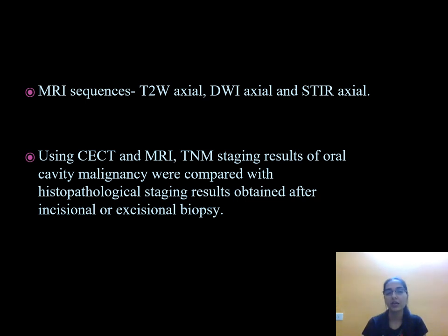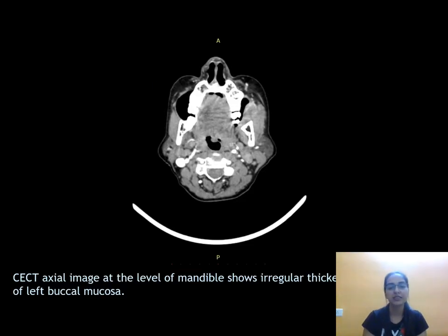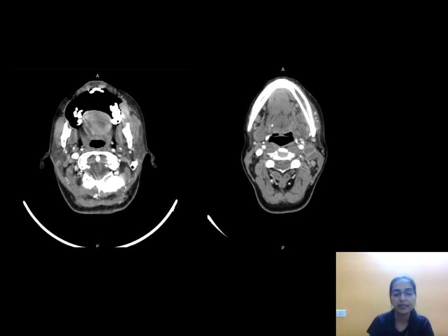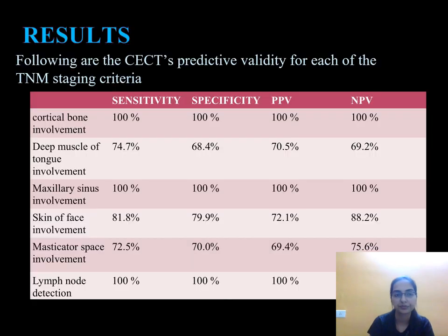The CCT axial image at the level of mandible shows irregular thickening of the left buccal mucosa, extending anteriorly from the left first molar to the ramus of the left mandible posteriorly. There is erosion of the adjacent mandible with extension into its marrow cavity. Subtle extension is also seen in the left retromolar trigone, and the lesion shows heterogeneous enhancement on post-contrast images.